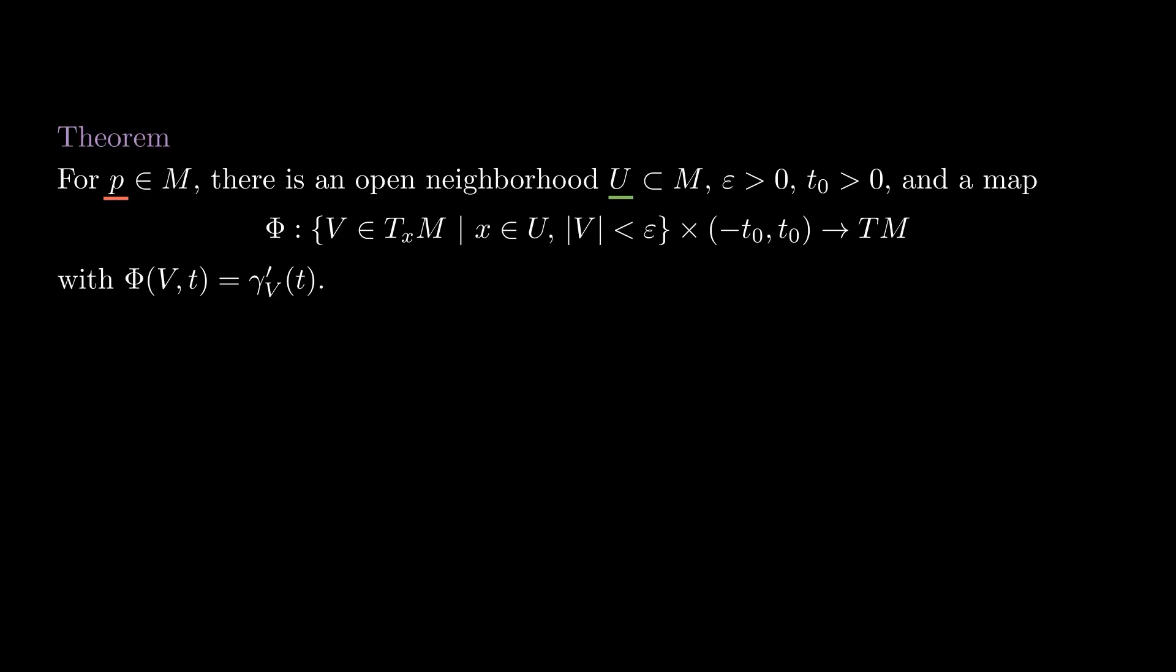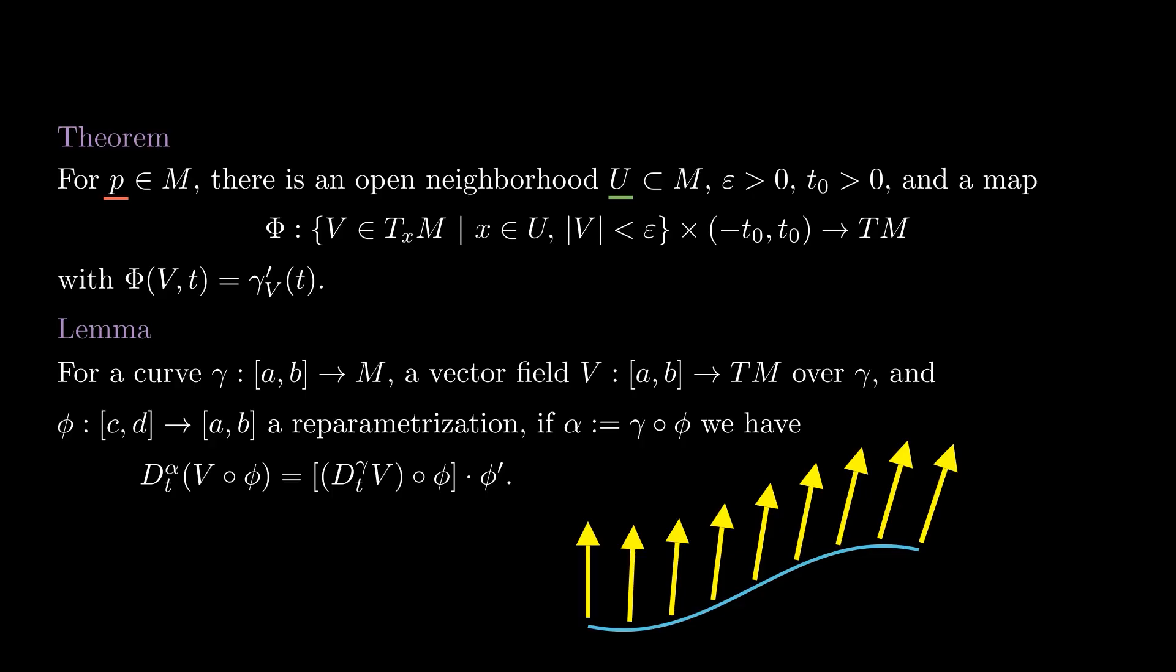This flow will be even more useful after we prove the homogeneity property of geodesics, but we first need a chain rule for the covariant derivative. If we have a curve gamma, a vector field V along gamma, and a reparametrization phi, then we can relate the covariant derivative along gamma to the covariant derivative along the reparametrization. Let's call the reparametrization alpha, and denote the covariant derivatives along alpha and gamma by d_alpha and d_gamma respectively. Then V composed with phi is going to be a vector field along alpha, and its covariant derivative coincides with the covariant derivative of V along gamma times phi prime. You can check this identity by first verifying it for coordinate vector fields, and then using the Leibniz rule to get it in general.